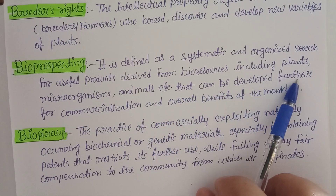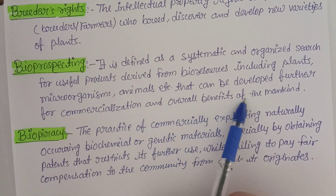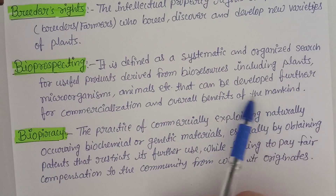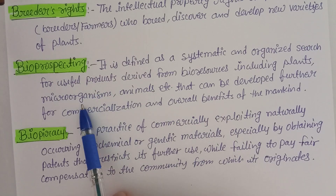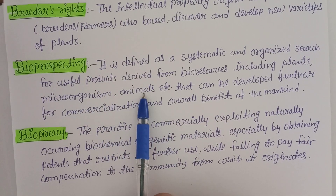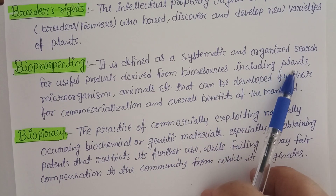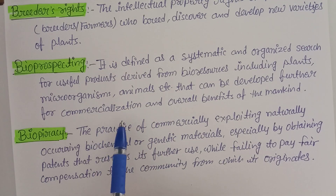These bioresources can be developed further for commercialization and the overall benefit of mankind. They should have medicinal value or nutritional value — something we are getting from bioresources. For example, penicillin we get from microorganisms, different types of hormones from animals, and different types of drugs from plants. All of this can be protected — that is bioprospecting.